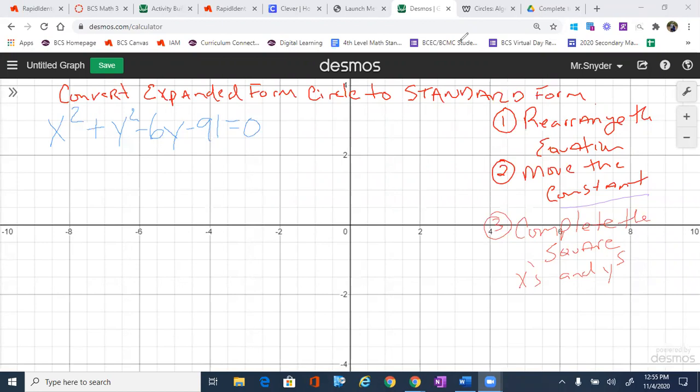It says rearrange the equation and move the constant. So I'm going to break, when I rearrange this, I'm going to break it into its pieces of X and Y. So you'll notice there is only one part that is an X, that is X squared. And then I'm going to collect all of my Y values. So I'm going to say Y squared minus 6Y. And then what I'm going to do is move that negative 91 over to the other side. So that is going to become a positive 91 in order to do that.